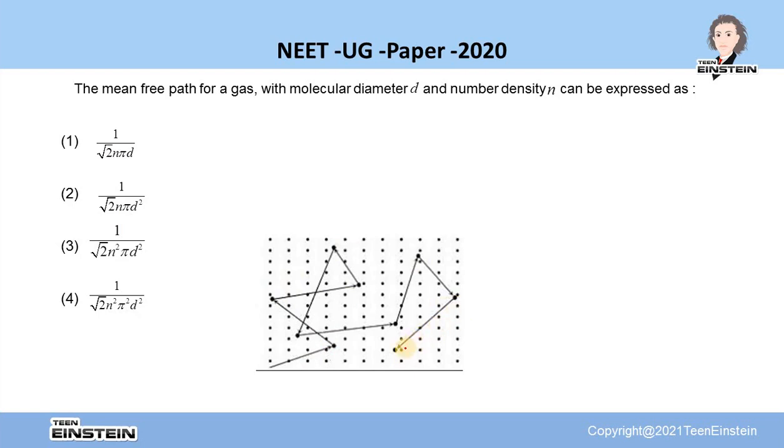If we take the total distance they cover and divide by total number of collisions, then we get the mean free path. Mean free path is the average distance traveled by the gas molecules between two successive collisions.